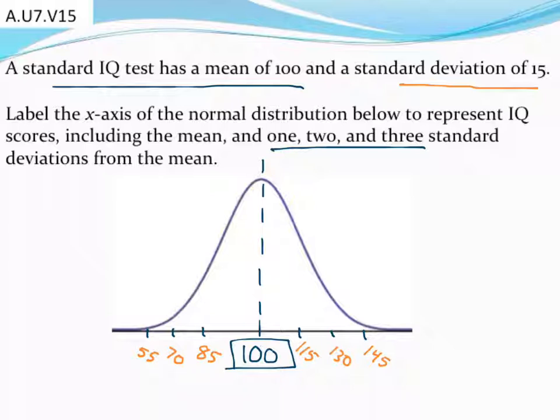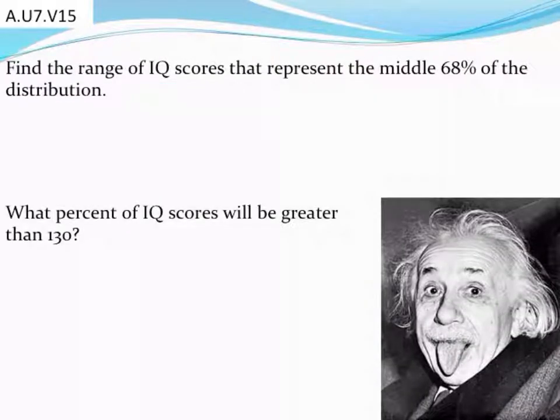So there's my sketch of a graph that has the mean labeled as well as three standard deviations above and below the mean. And now that we have this sketched out, I can use this along with the empirical rule, which we'll review here in a second.